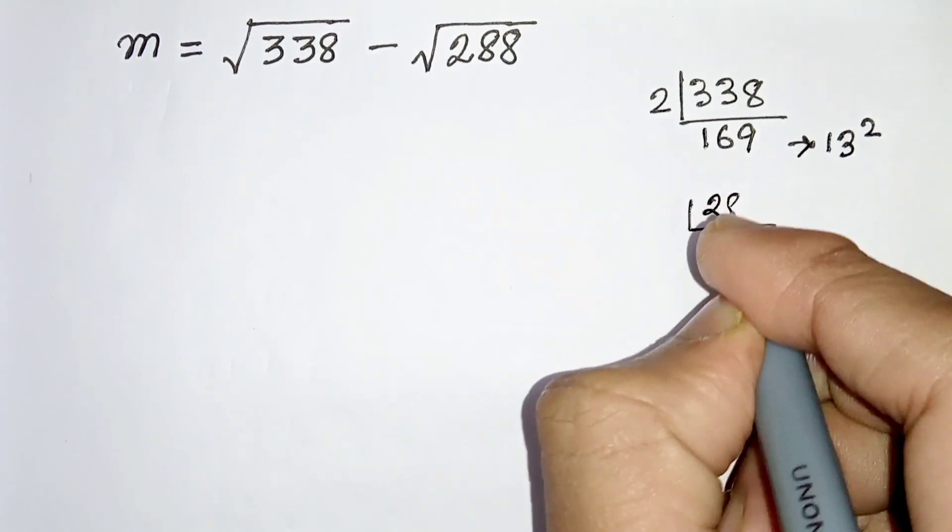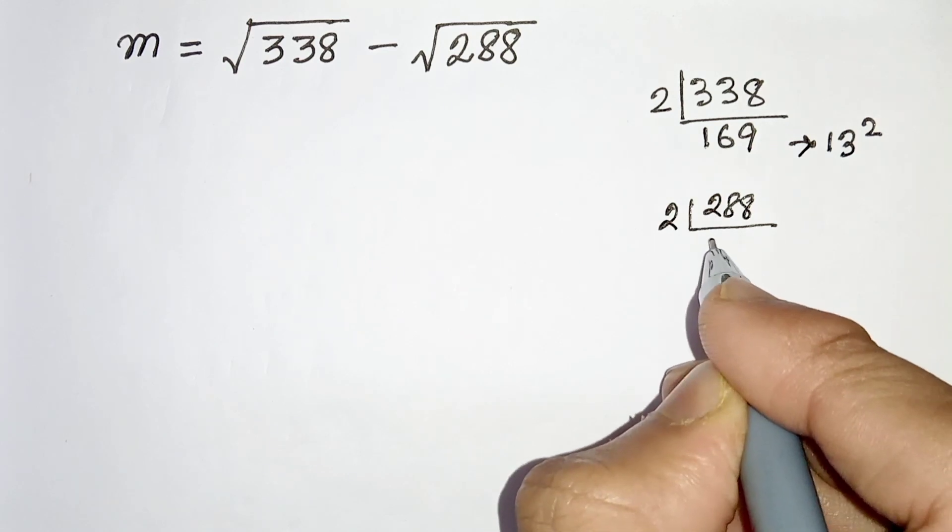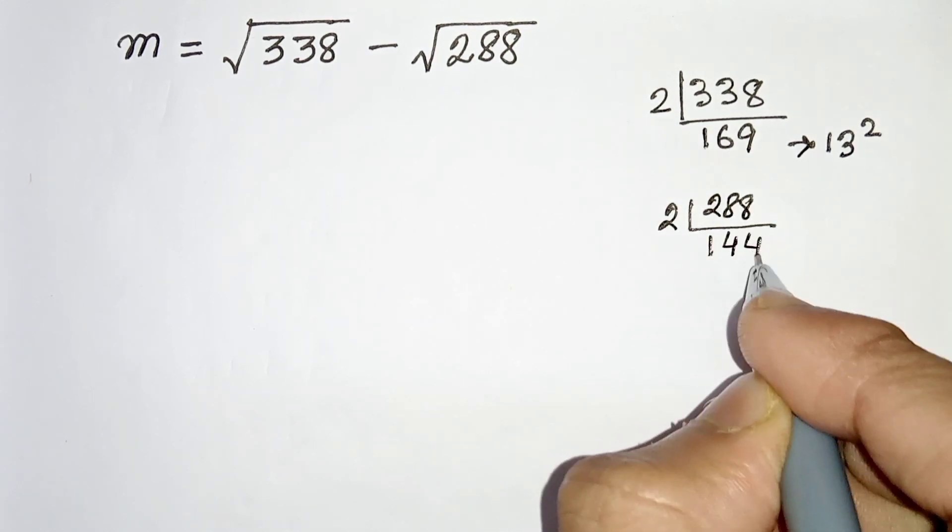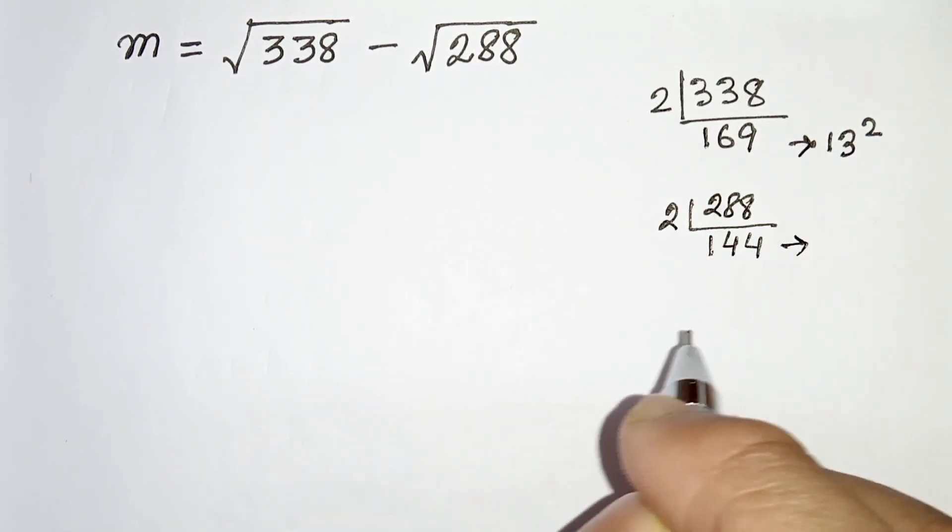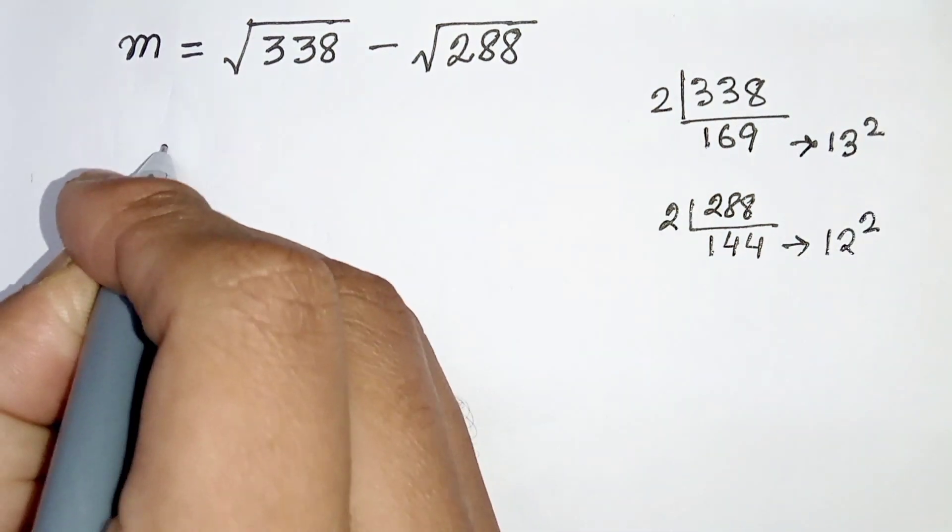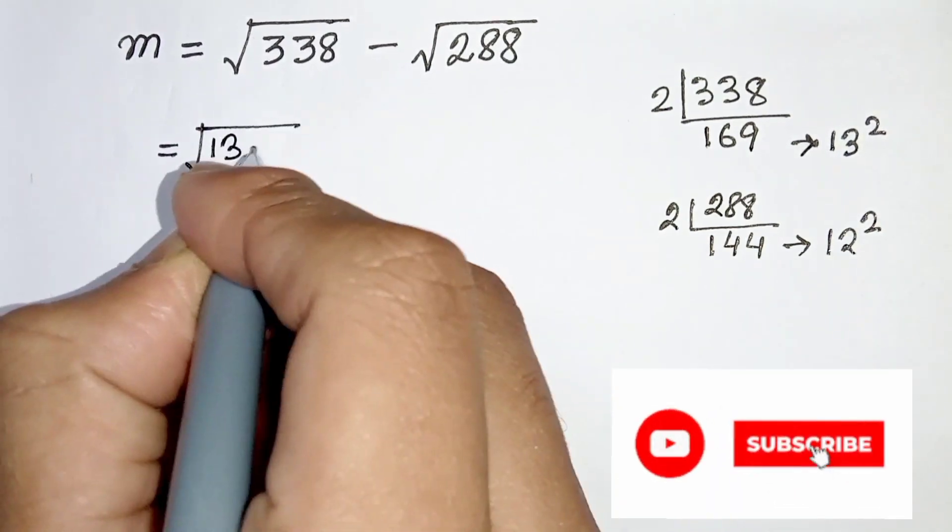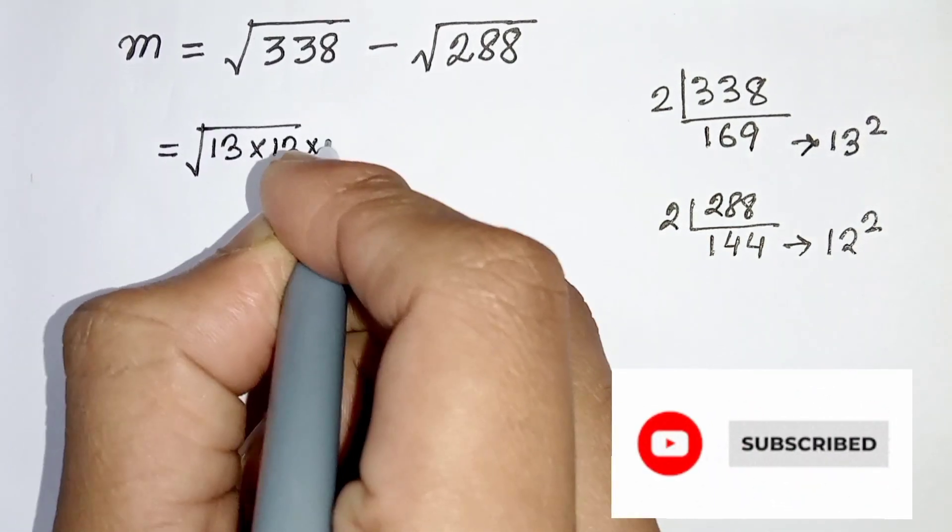288, if you find the factor we will get 144. Again, 144 can be represented as a perfect square which is 12 squared.